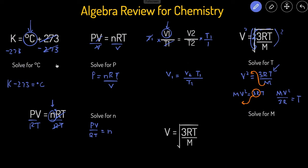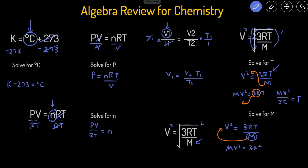In the next problem we solve for M from the same equation. Again, we square both sides to eliminate the square root, giving us V squared equals 3RT over M. Now M is on the bottom, so we cross multiply — or use the shortcut of bringing M to the top of the other side — giving us M times V squared equals 3RT. Then we divide both sides by V squared, which cancels it out, leaving M equals 3RT over V squared.